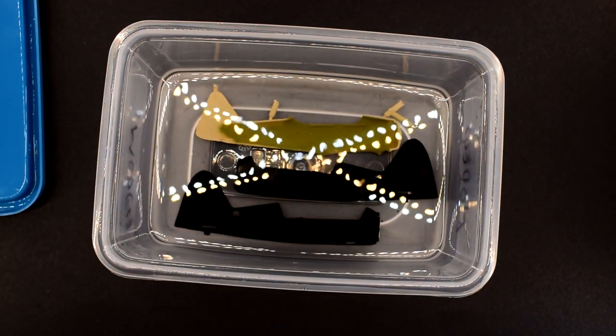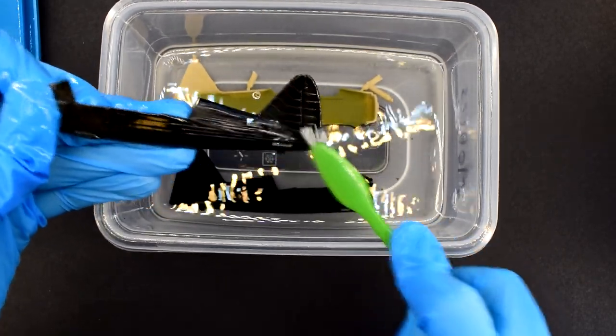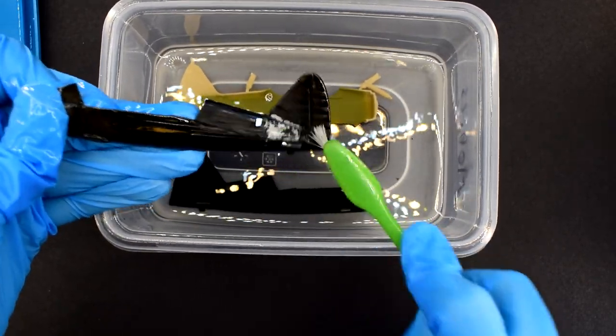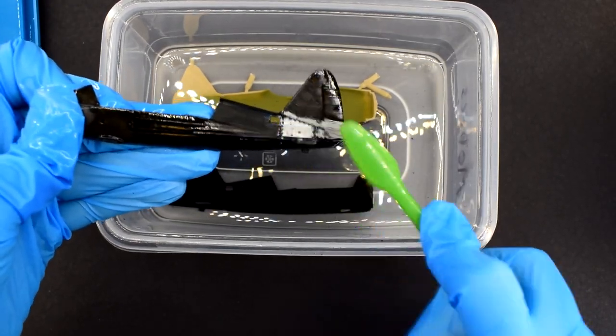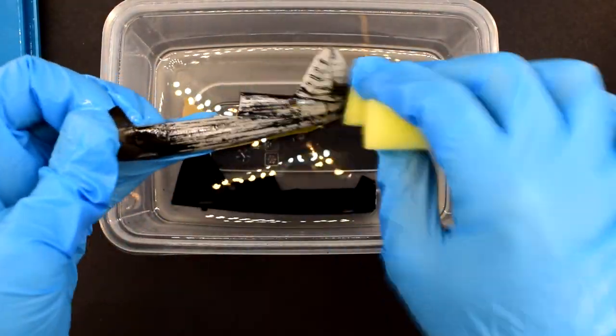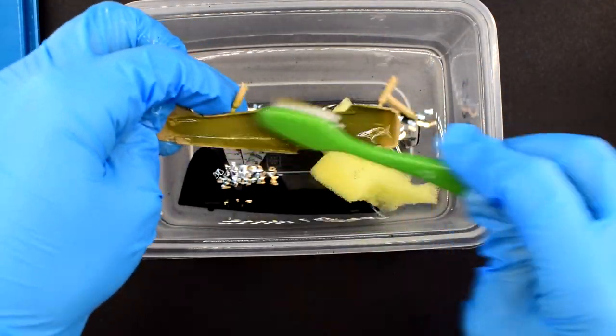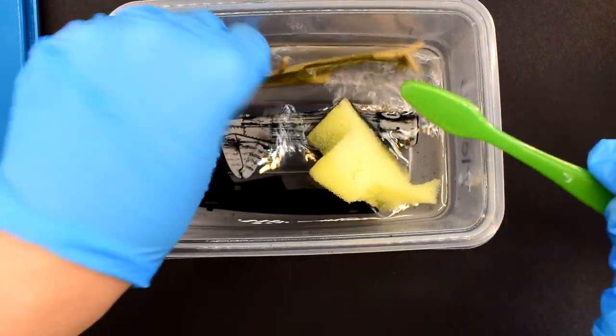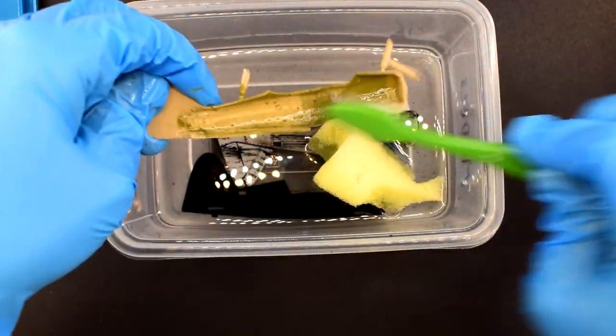As you can see, after only 20 minutes, the black enamel paint is starting to come away from the plastic. I find that an old toothbrush or sponge is a good tool to help get this paint removed. The acrylic paint is also removable at this point as well. Actually, I found that about 20 minutes was enough for acrylic, but you might need slightly longer to get rid of all the enamel paint.